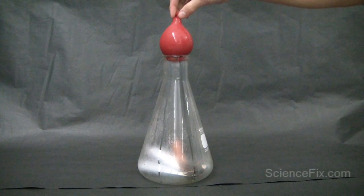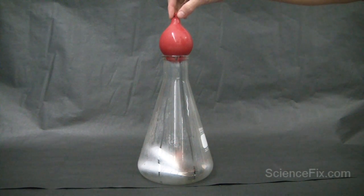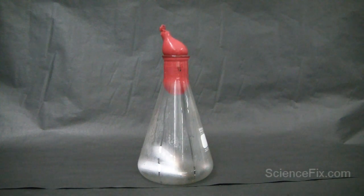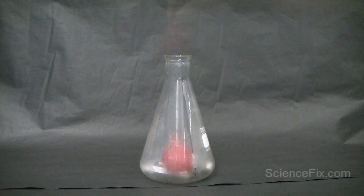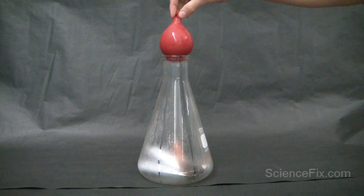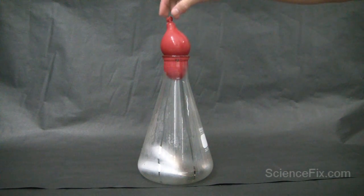Now what happens when the flame goes out is the gases start to cool down rapidly. Since they are cooling down they are condensing, taking up less space, lowering the pressure inside. This causes the balloon to be pushed in from the outside because the atmospheric pressure is greater than the inside pressure, and the balloon gets pushed down into the flask.